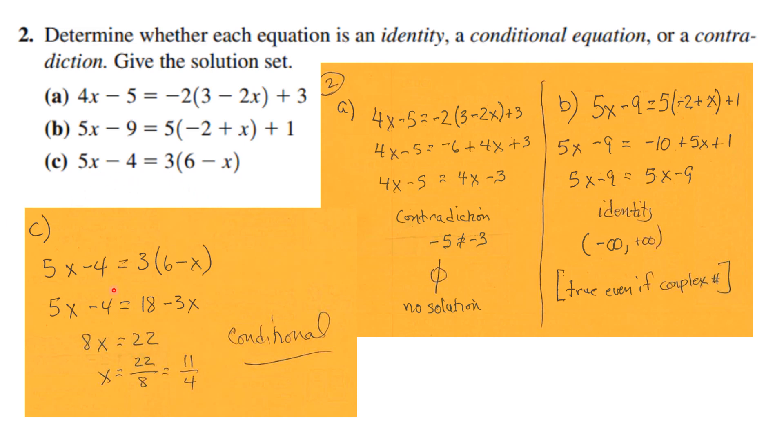Finally, we expand the 3 across getting 18 minus 3x. We isolate the x and the number and put our answer in lowest terms as 11 over 4. This equation is true only when x is 11 over 4 and never any other time, so we call it a conditional equation.